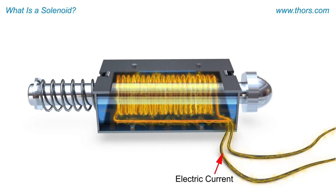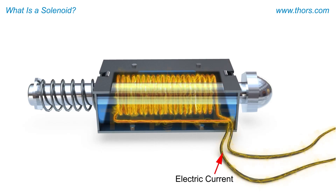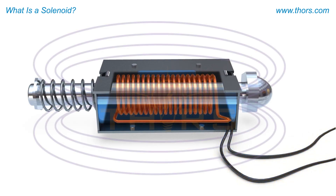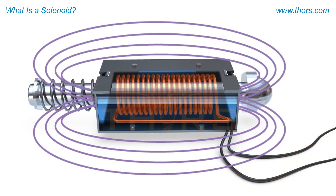When current passes through the terminals of the coil, the coil is energized by an electric current, and the coil generates a magnetic field. The magnetic field activates the metal plunger.